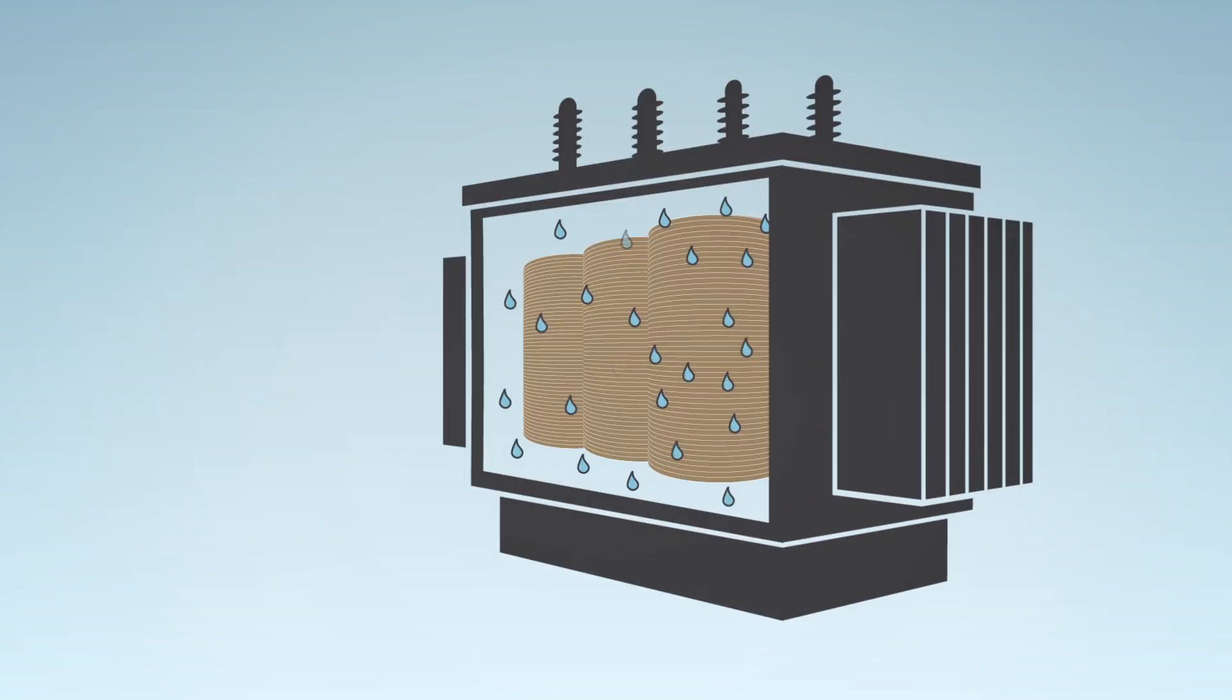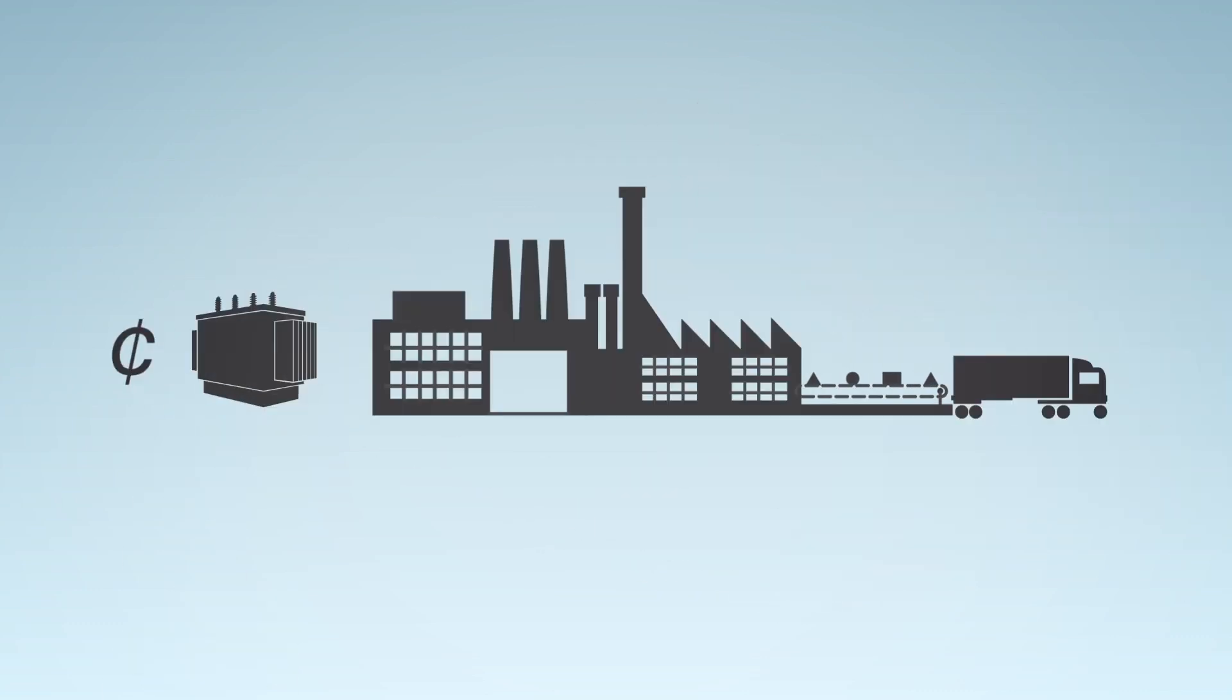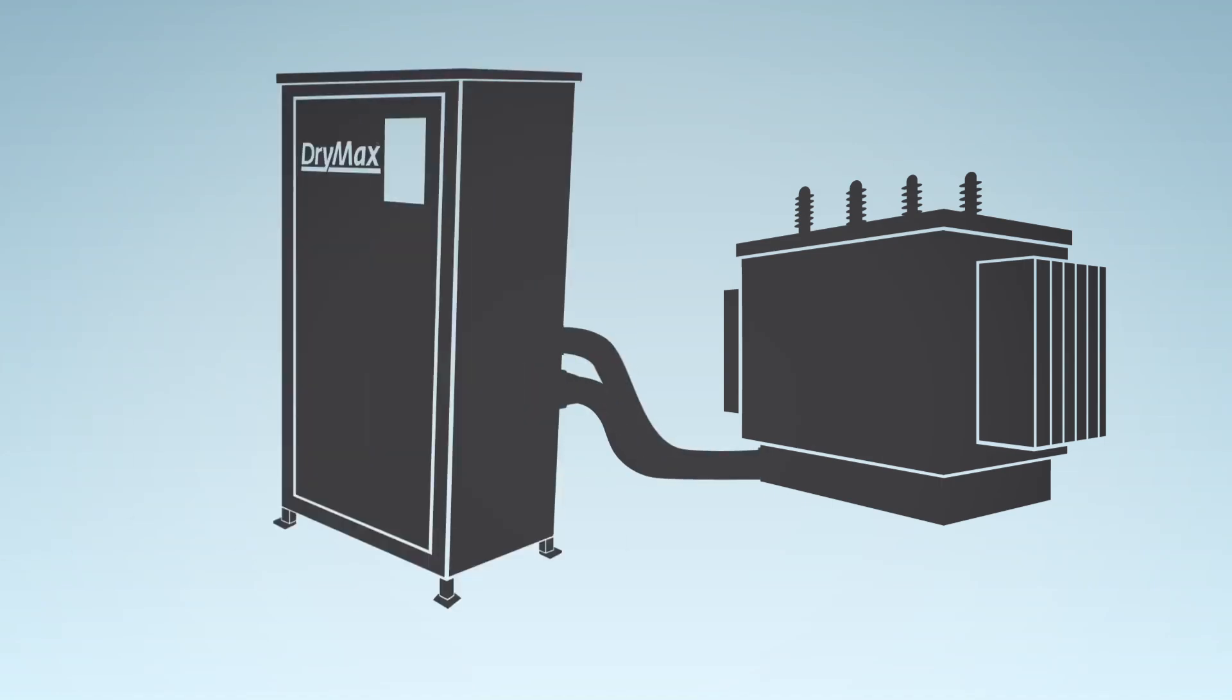What you really need is a way to remove the moisture from the oil and the paper without spending a fortune or taking your transformer offline to do it. An online dryer that you plug in and leave running unmanned for as long as it takes to completely remove the moisture from the oil and the paper. A solution you can monitor in real time from your desktop.